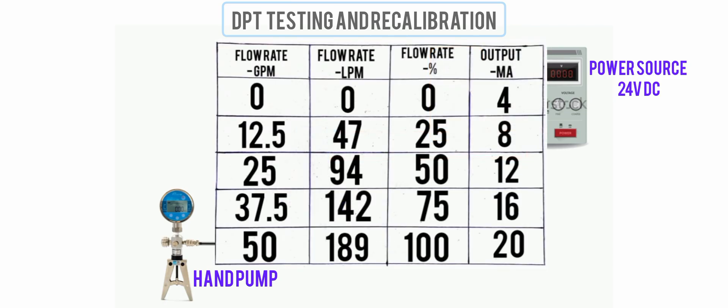From the table, we can see that if we set the hand pump input pressure to 50 inches of water column, our multimeter should read 8 milliamps.